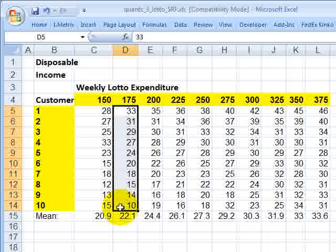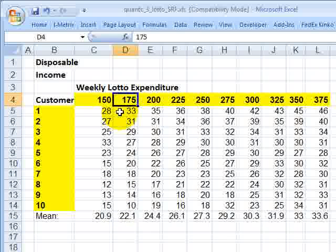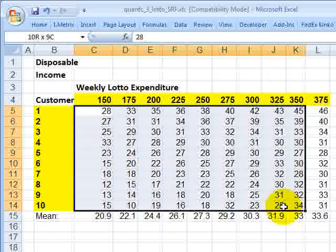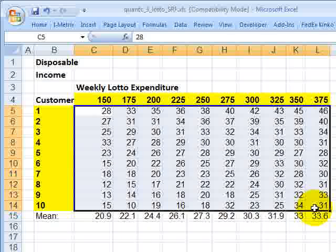Here's another 10 customers, their spend on the lotto, but they're at a higher tier of personal disposable income. This is the population. There's 100 data points here.